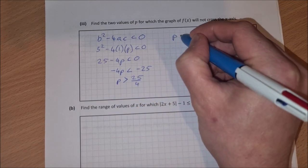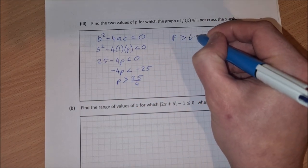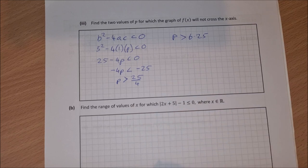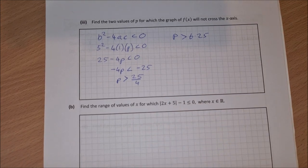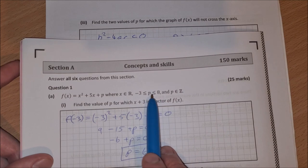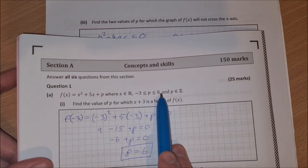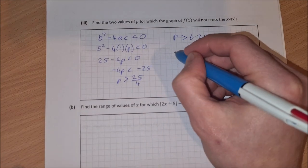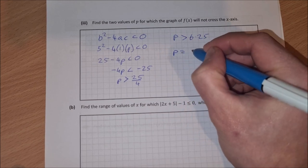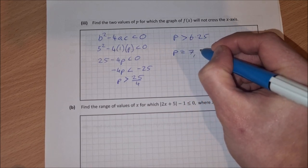So that is p is greater than 6.25. And if you remember from the question we had at the start, p is between minus 3 and 8. So that means p is equal to 7 and also equal to 8.